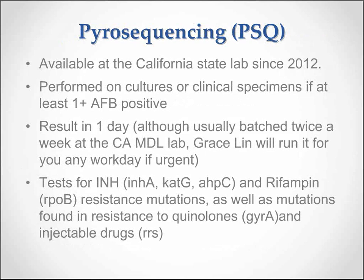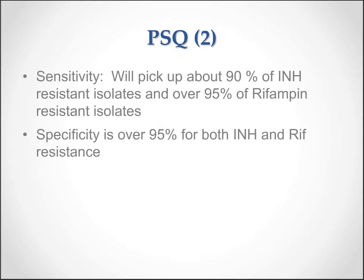Pyrosequencing has been available at the California State Lab since 2012. It's performed on cultures or clinical specimens if at least AFB 1+ positive. The result is available in one day, usually batched, but Grace Lynn at the lab will run it for you any workday if urgent. It tests for INH resistance mutations — INHA, KATG, and AHPC — and rifampin RPOB resistance mutations, as well as mutations found in resistance to quinolones (gyrase A) and injectable drugs (RRS). Its sensitivity is about 90% for INH-resistant isolates and over 95% for rifampin-resistant isolates, with specificity over 95% for both.